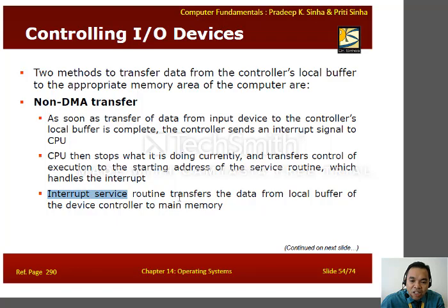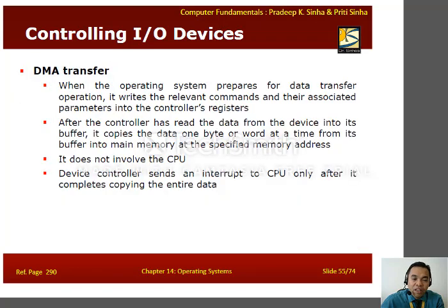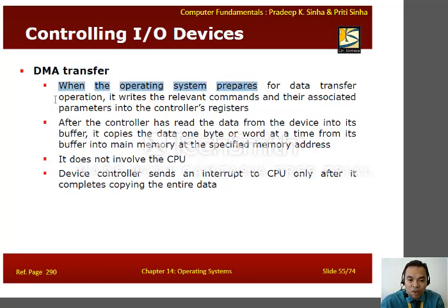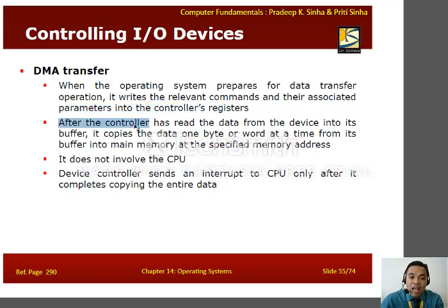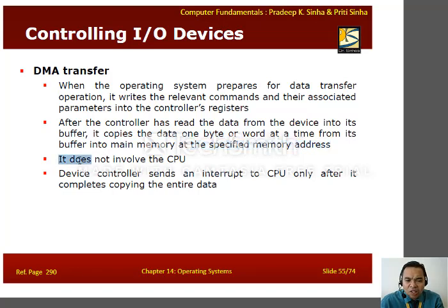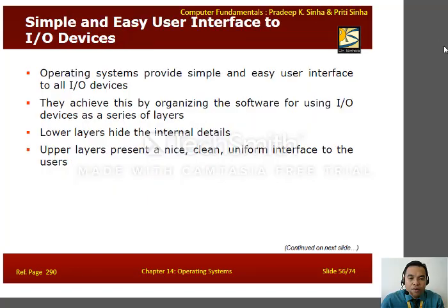The interrupt service routine transfers the data from the local buffer of the device controller to the main memory. The second method is DMA transfer. When the operating system prepares for a data transfer operation, it writes the relevant commands and their associated parameters into the controller's registers. After the controller reads data from the device into its buffer, it copies the data one byte or word at a time into main memory at the specified address, without involving the CPU. The device controller sends an interrupt to the CPU only after it completes copying the entire data.